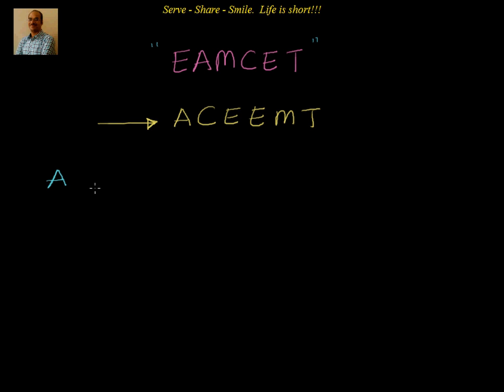We don't want them. So A, EAMCET is a 6 letter word. So A is already fixed. I have 5 more slots to be fixed and they need to be fixed with the letters C, E, E, M and T. Now how many ways I can do that? A is fixed. So these 5 letters has to take the slots.